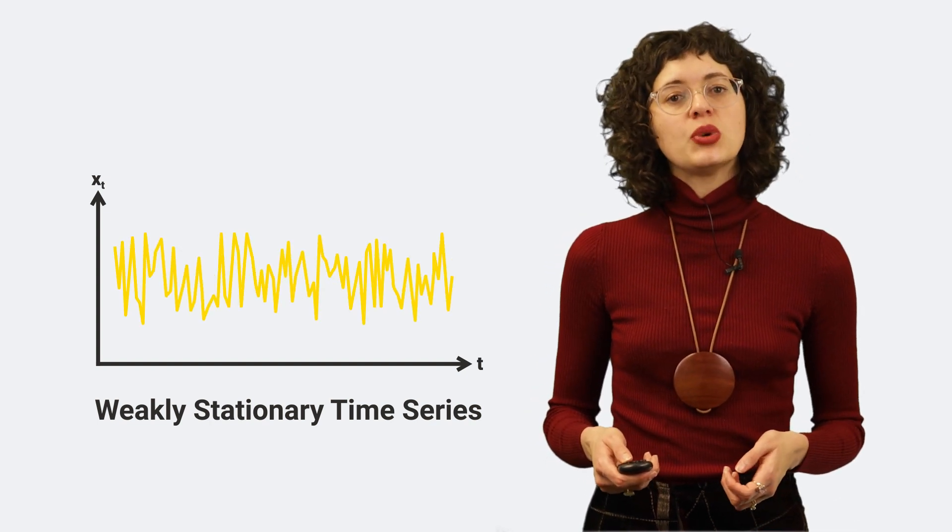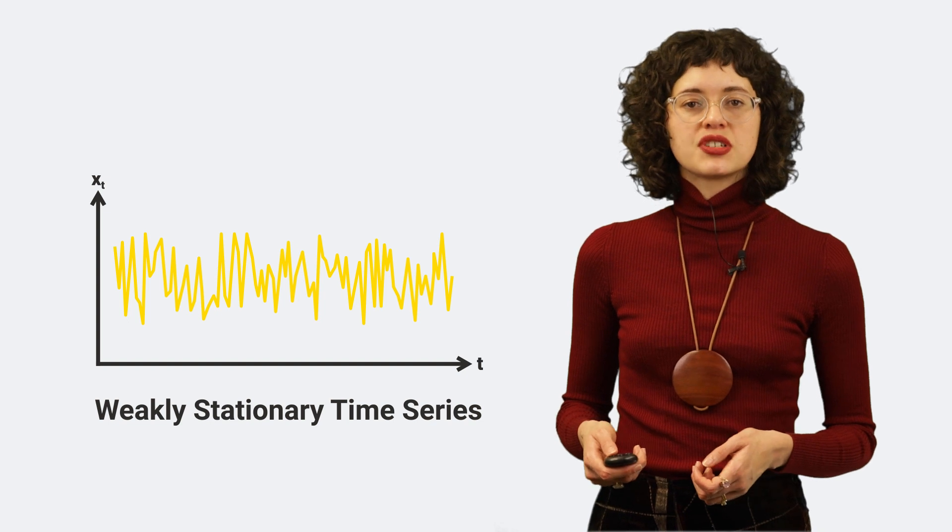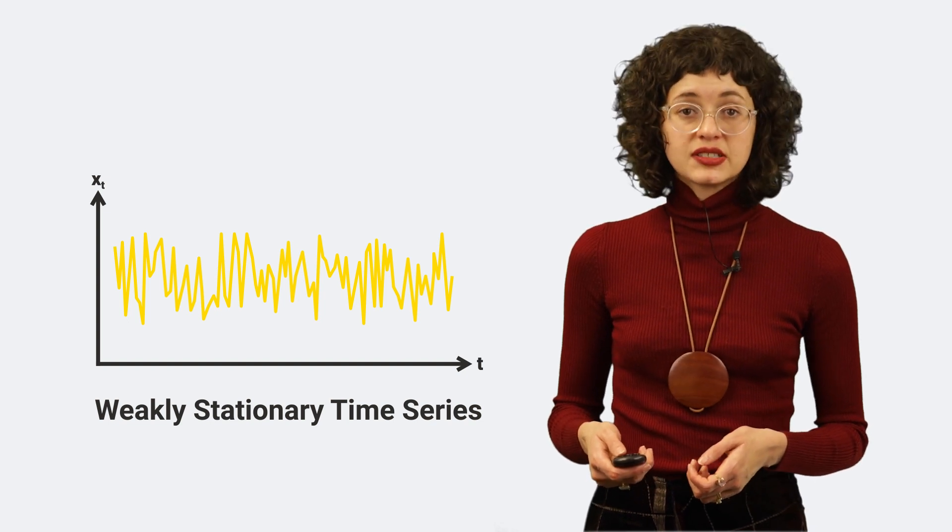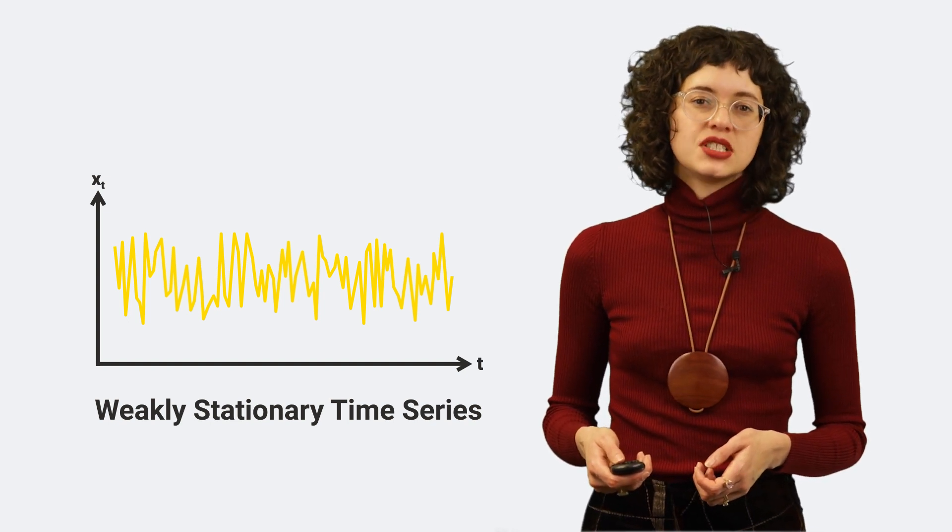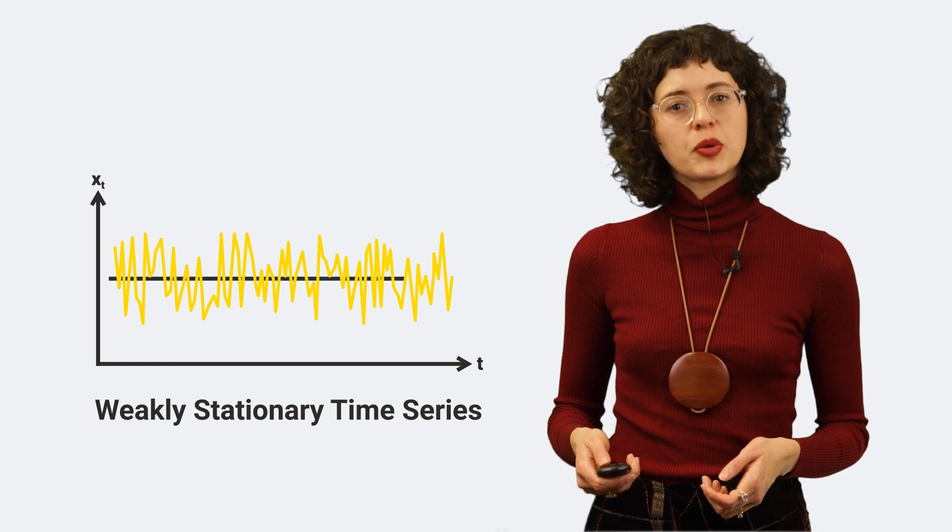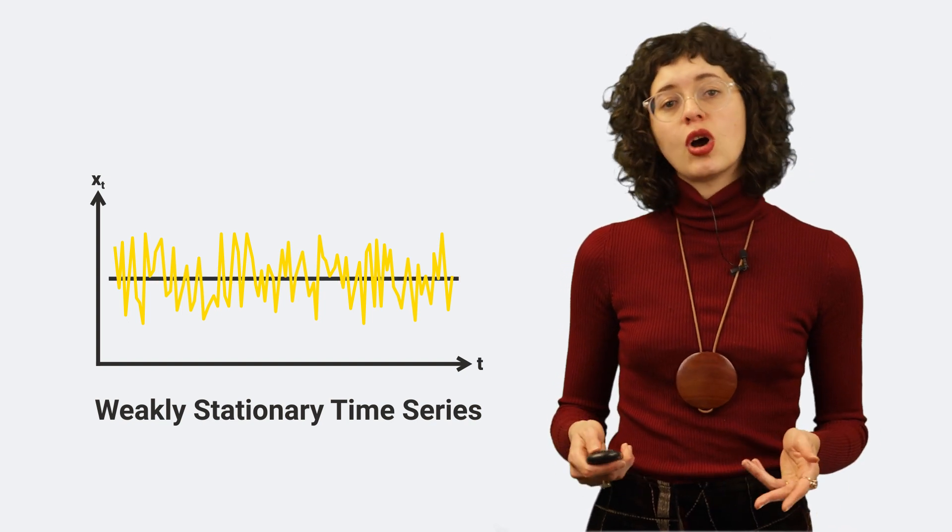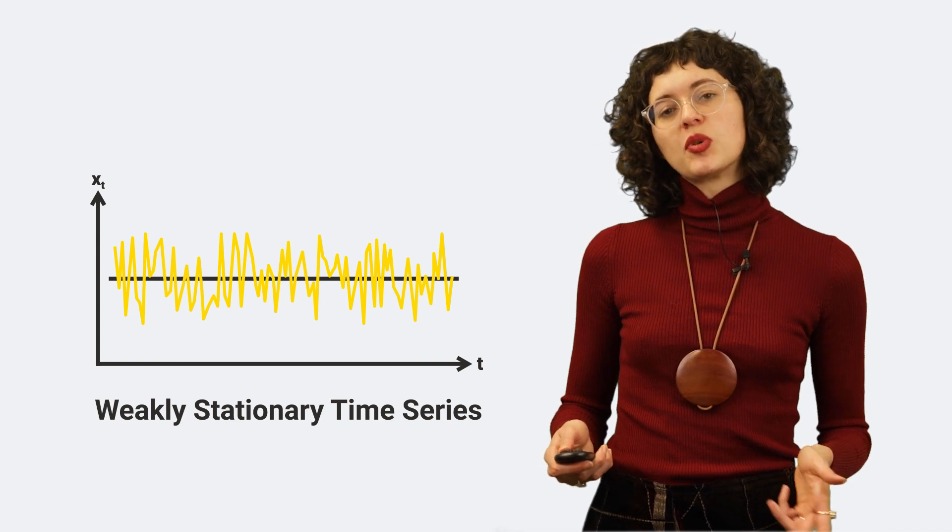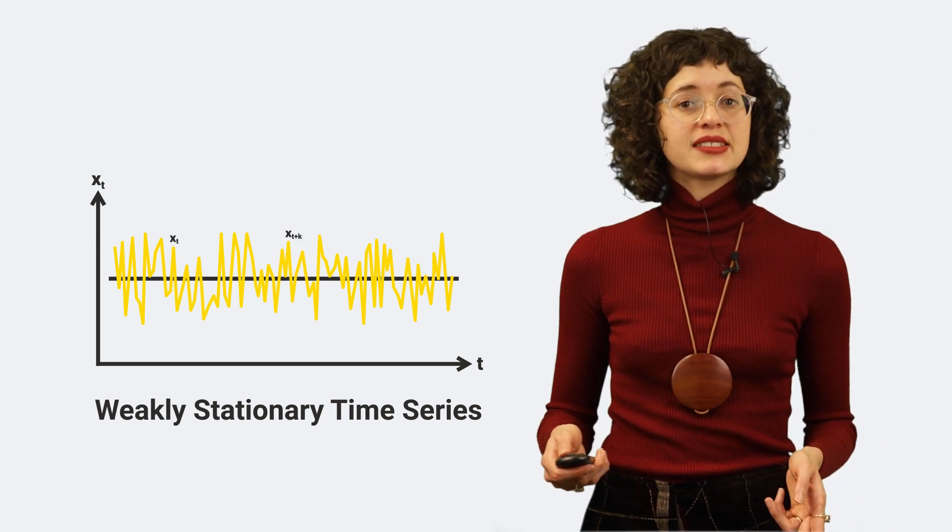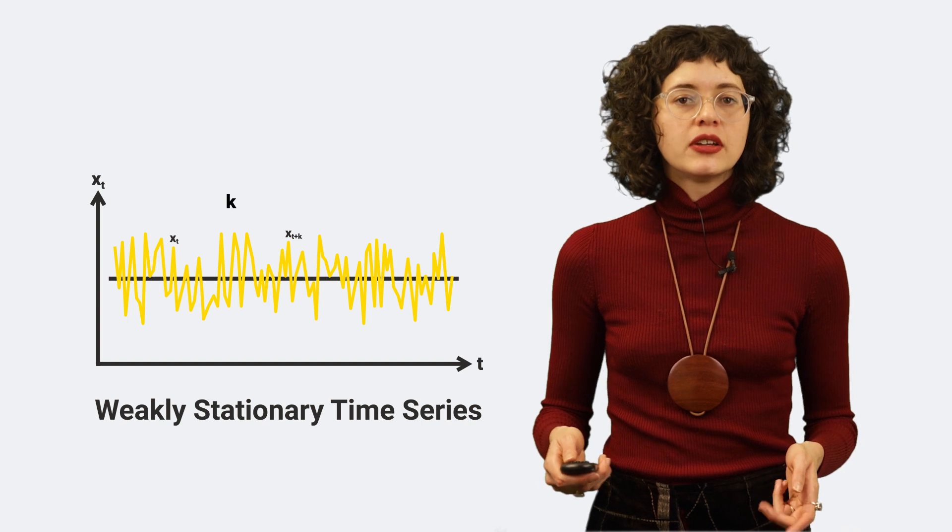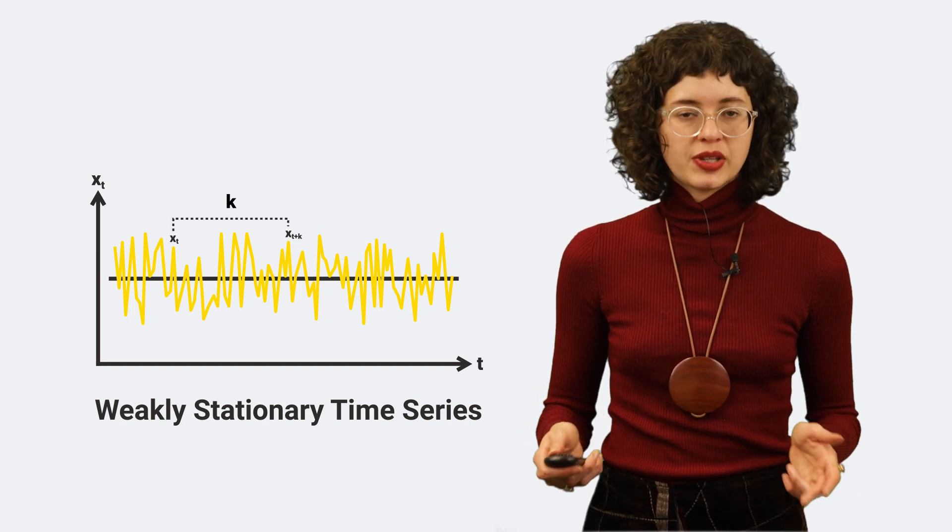A time series is weakly stationary if two conditions are satisfied. First, all of its random variables xt follow distributions with a constant population mean, and second, the population autocovariance between random variables xt and xt plus k depends only on k, which is the length of the lag between them.